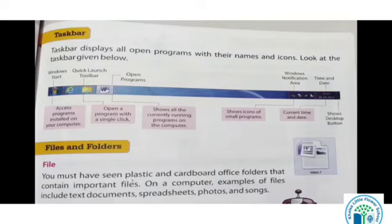Now files and folders. File kya hai — you must have seen plastic and cardboard office folders that contain important files. On a computer, examples of files include text documents, spreadsheets, photos and songs. Files kya hai — aapne dekha hai plastic and cardboard ki office mein folders hote hai, hummare ghar pe bhi hote hai na, jiske under hum important documents rakhte hai, photos rakhte hai. To uske under for example — files include text, text kuch likhe hue documents hote hai. Spreadsheets yani kya, jiske under rows and columns se banaya hua koi program likha ho. Yeh hamare important photos ho, ya songs ho, kuch bhi ho sakta hai — wo hum ek file bana ke save kar sakte hai.